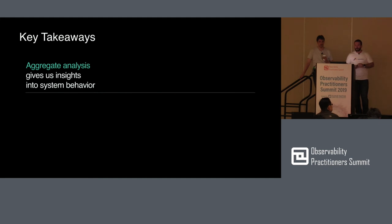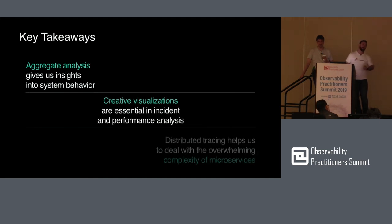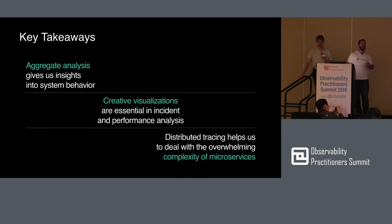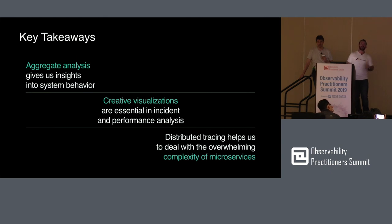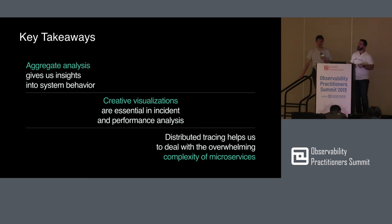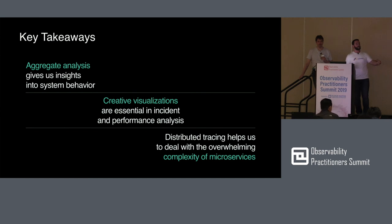From a takeaways perspective: distributed tracing makes it possible to deal with the complexities of a microservices-based architecture. It provides the missing link of context and correlation that's critical from an observability standpoint, and can help highlight and enhance the metrics and logs you're already leveraging. It's really the aggregate analysis where you get the most value — individual traces can be valuable, but you want to understand how the system behaves overall. Creative visualizations make it much easier to consume distributed tracing data so you can ask the questions you care about. Take a look at distributed tracing options out there; as you move to microservices you'll find it provides rich insights.